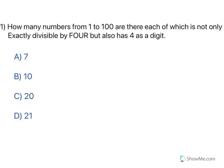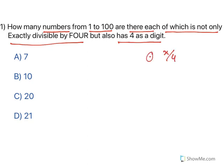Let us see some examples. How many numbers from 1 to 100 are there, each of which is not only exactly divisible by 4, but also has 4 as a digit? Two requirements are there: one, it has to be exactly divisible by 4; two, it has to contain 4 as its digit. Both requirements should be met. Let us think and write about those numbers.